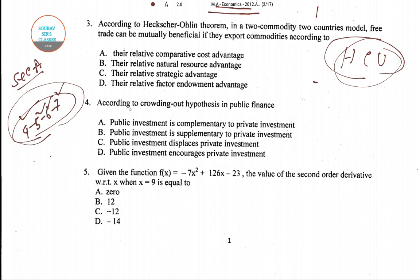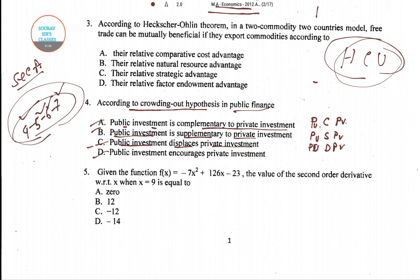In question number four, according to the crowding out hypothesis in public finance, four options are given: first, public investment is complementary to private investment; second, public investment is supplementary to private investment; third, public investment displaces private investment; and fourth, public investment encourages private investment.